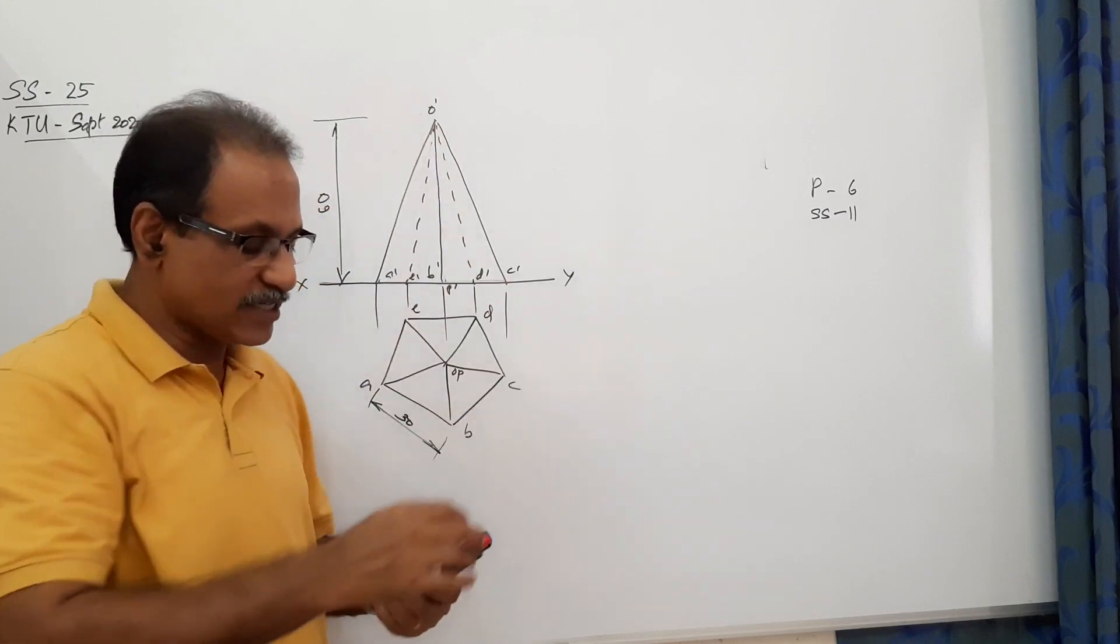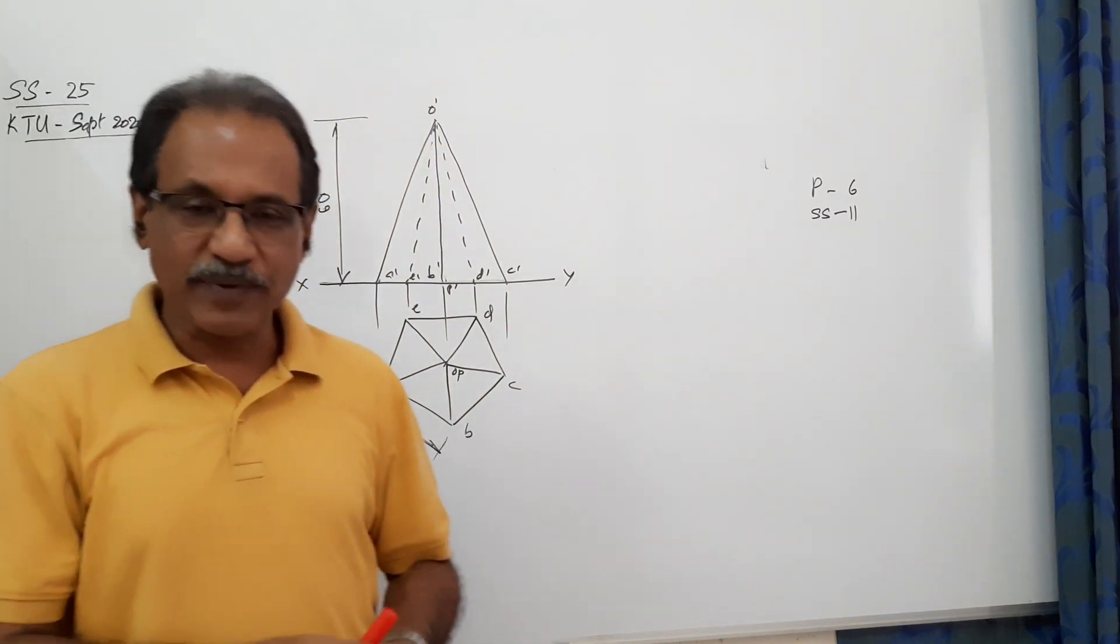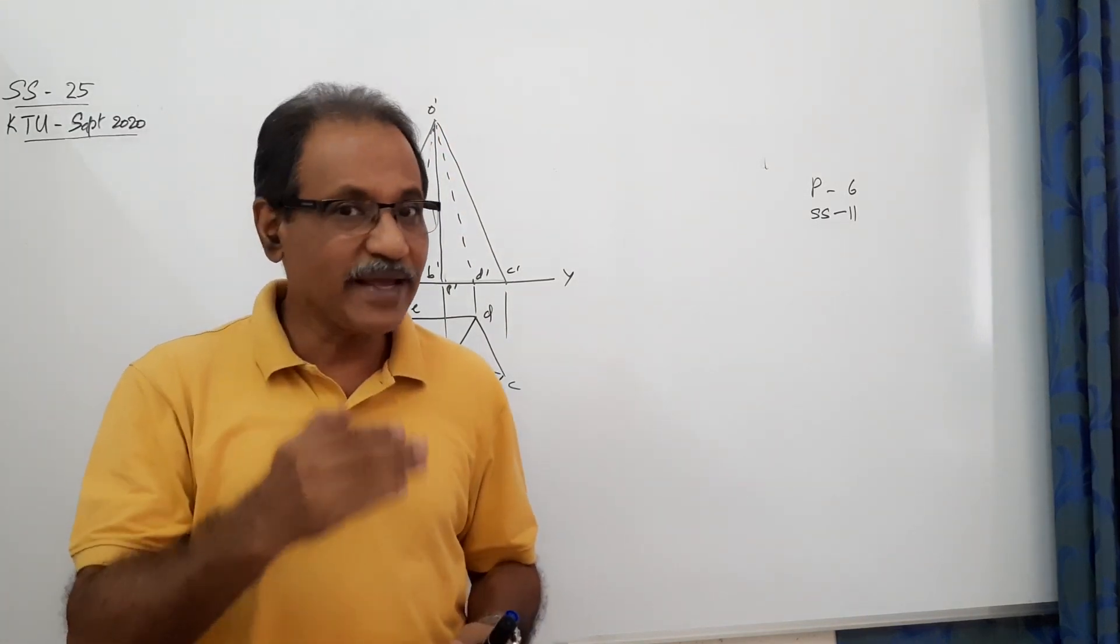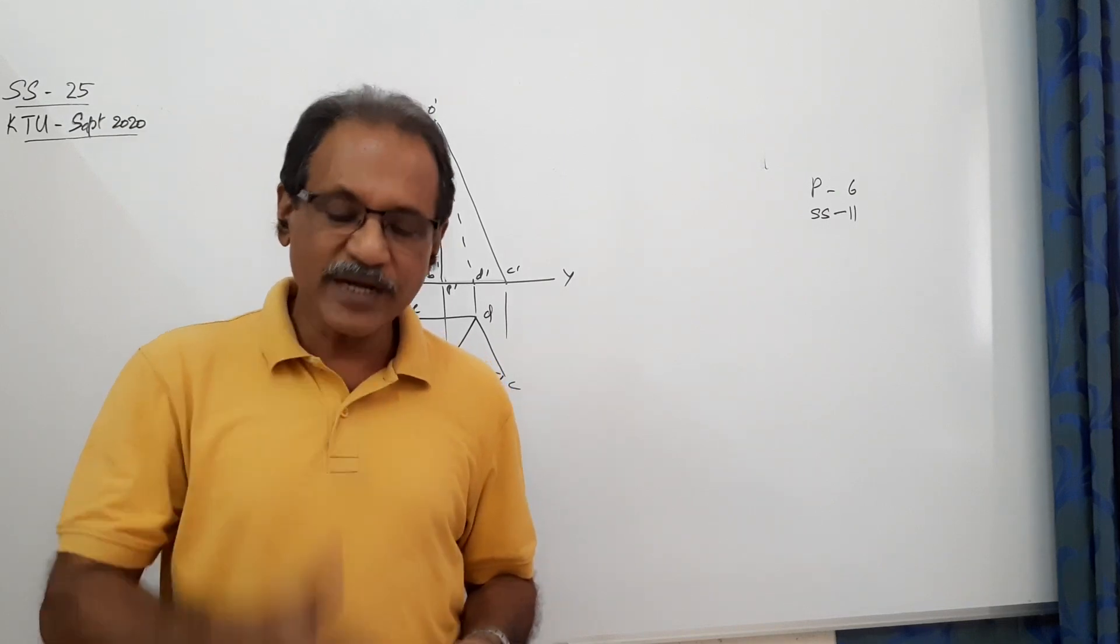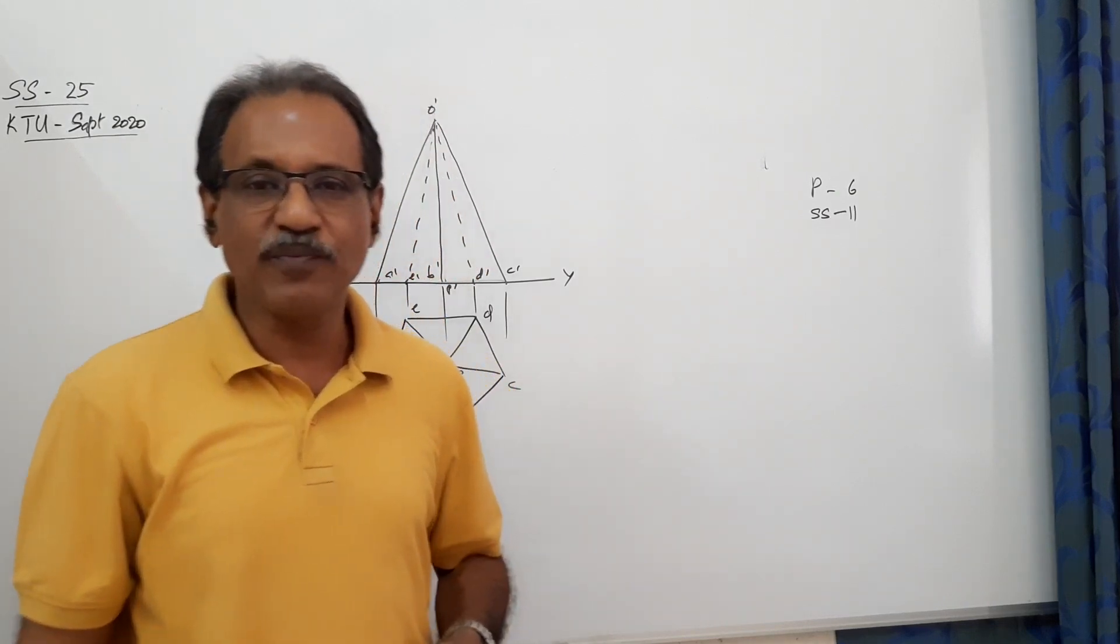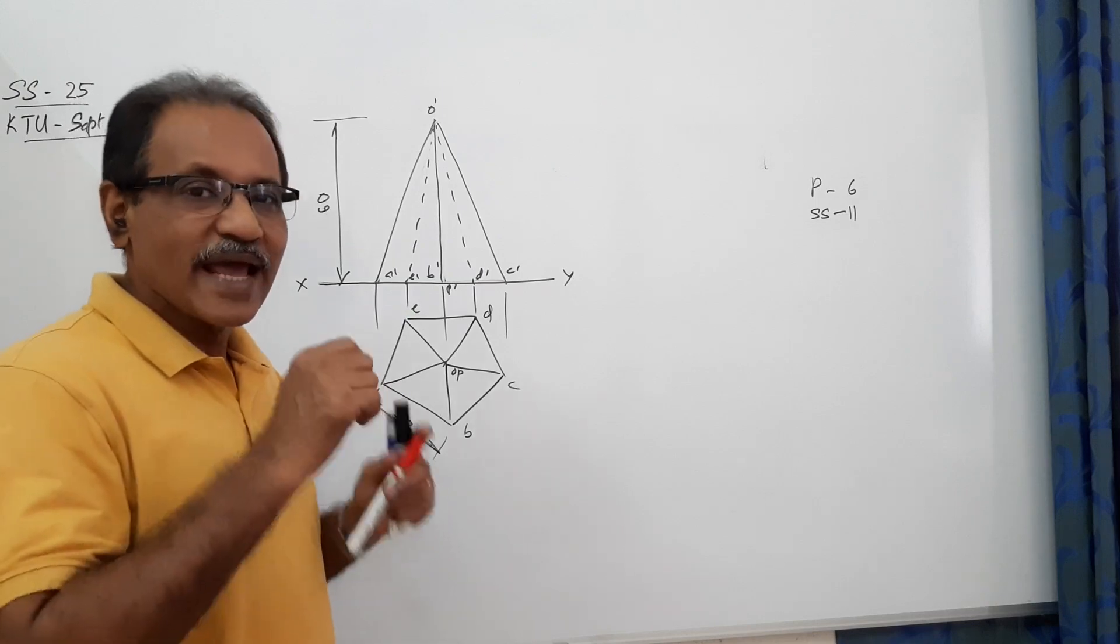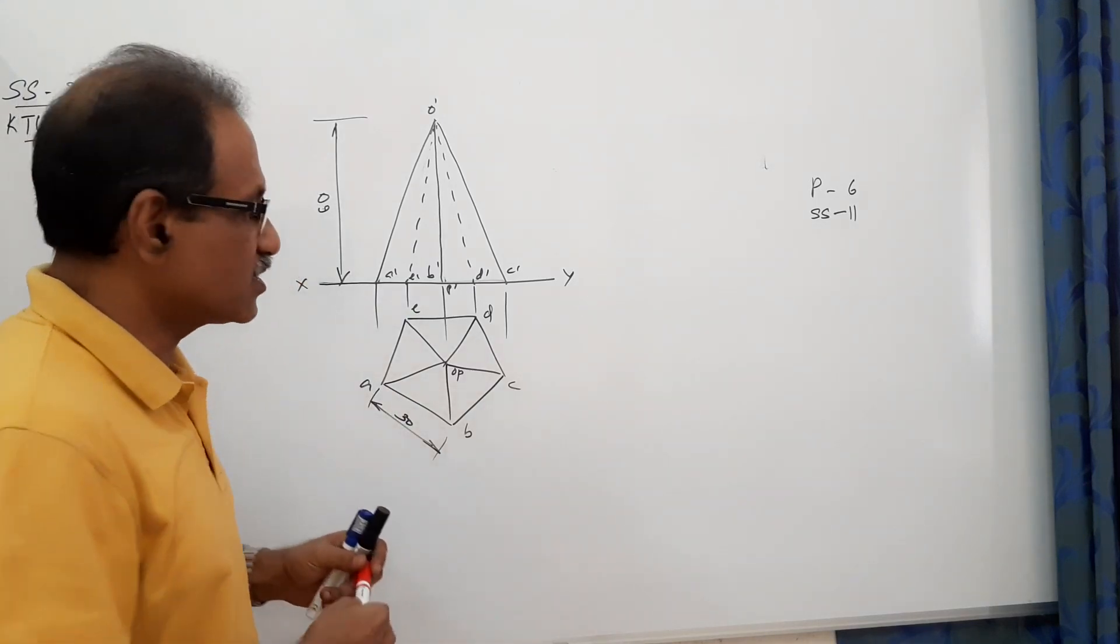This is the plan and derivation. This is cut by a cutting plane perpendicular to HP and 45 degrees to VP, passing through 8mm away from the vertical axis. So what you have to do?